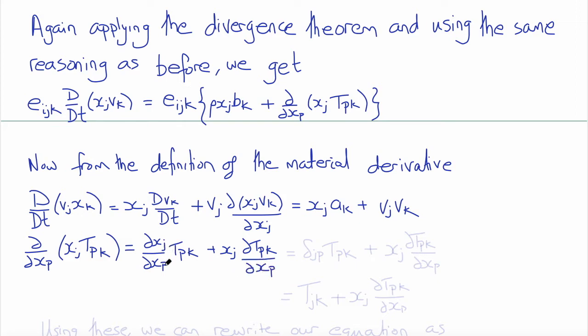Del XJ del XP here is delta JP times TpK plus XJ times del TpK del XP. So this term here then becomes TjK plus this term XJ del TpK del XP.